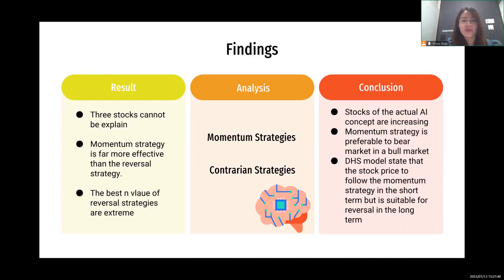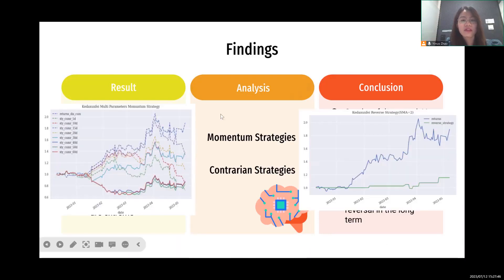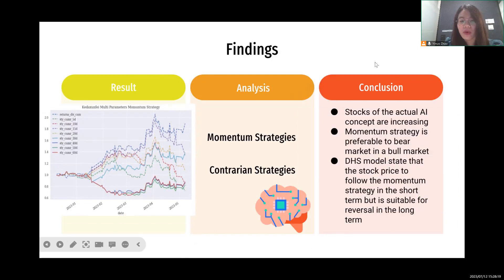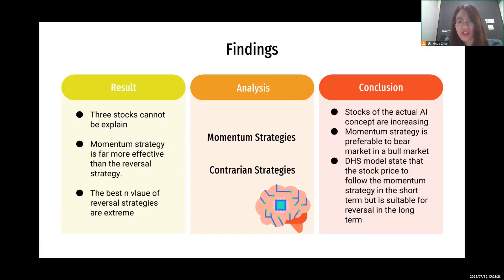Comparing the results of the momentum and contrarian strategies using one stock as an example: the return is the blue line, and all other lines are the predicted values of the momentum strategy. Despite different N values, they have plainly varied fading degrees, but every N value can basically predict the rising trend of every stage. The reversal strategy, however, failed to predict every stage's rising trend — it only predicts modest rising. We conclude that the momentum strategy can forecast at least 80% of upcoming stock price changes for the majority of AI concept stocks listed in the Chinese stock market, while the contrarian strategy is unable to accurately forecast market movements.